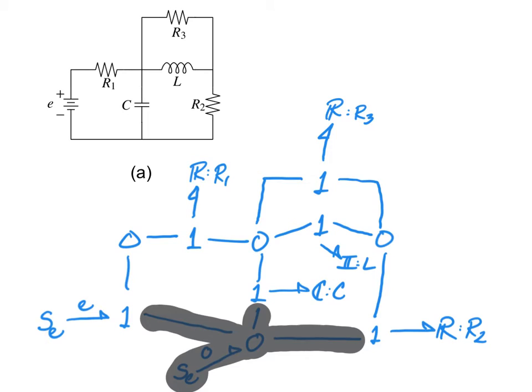If we do so, then we can simplify by connecting this effort source directly to that one junction, this R element directly to that zero, and this C element directly to that zero.